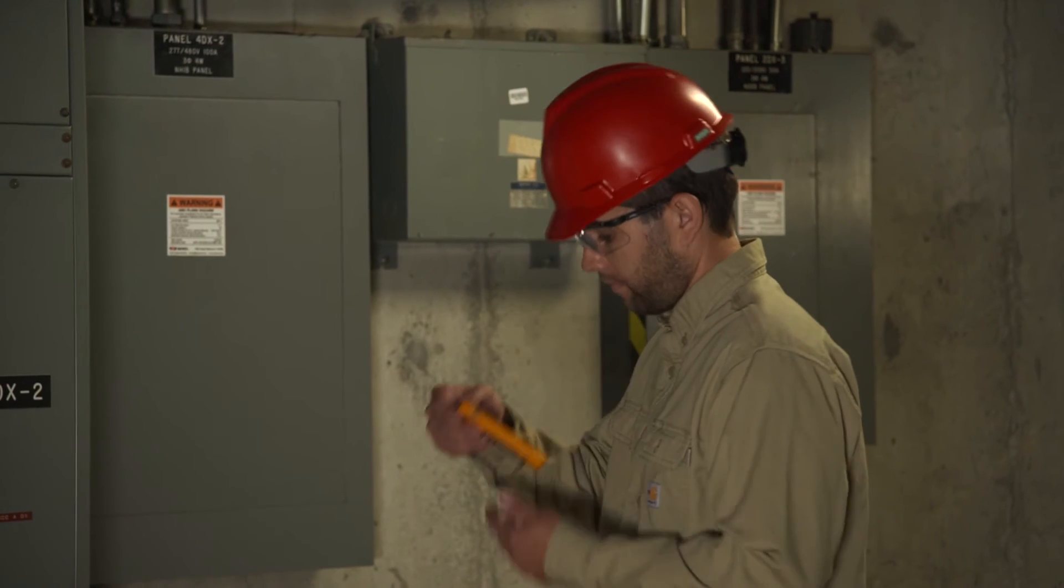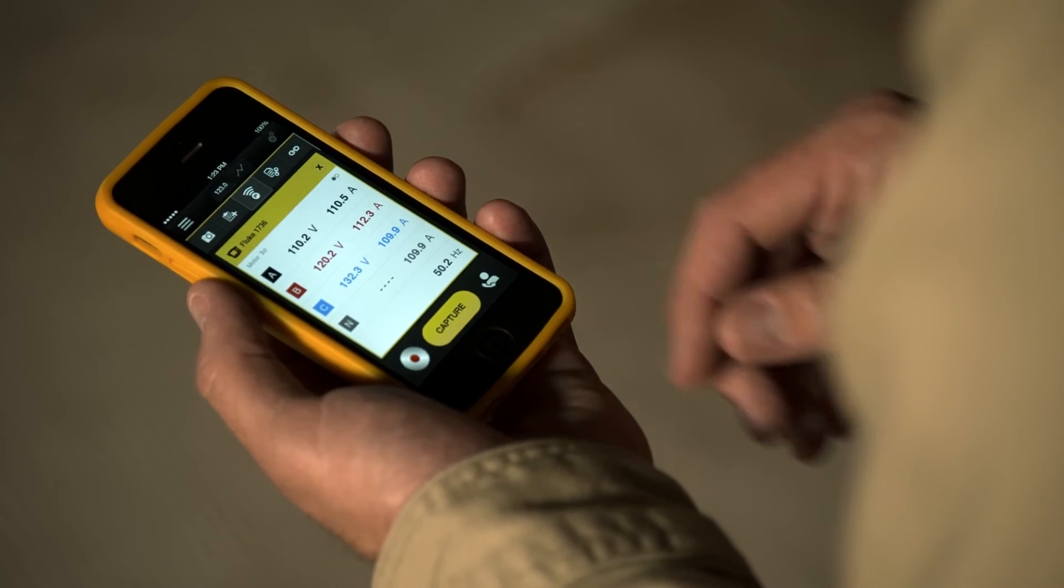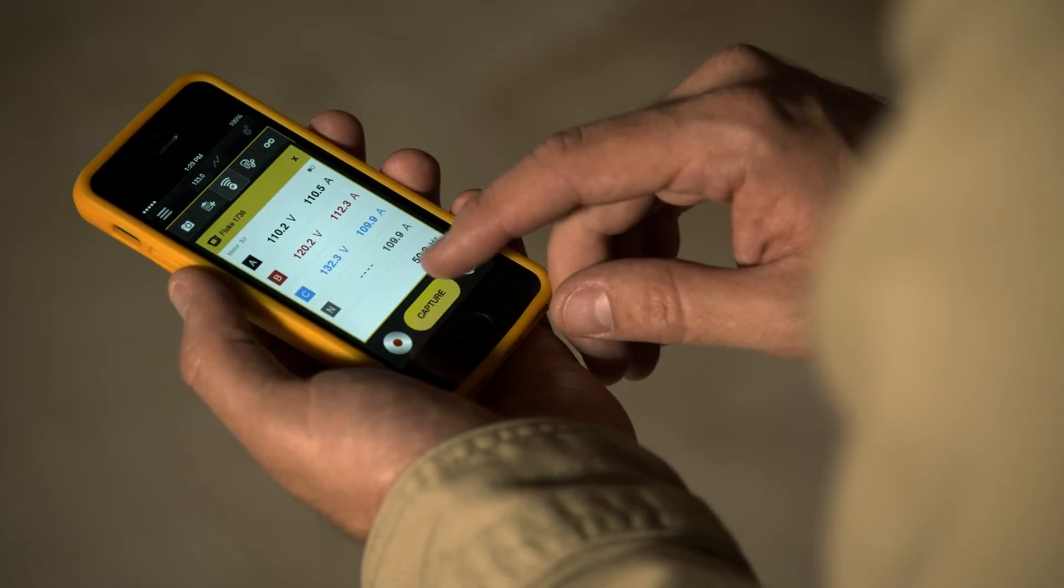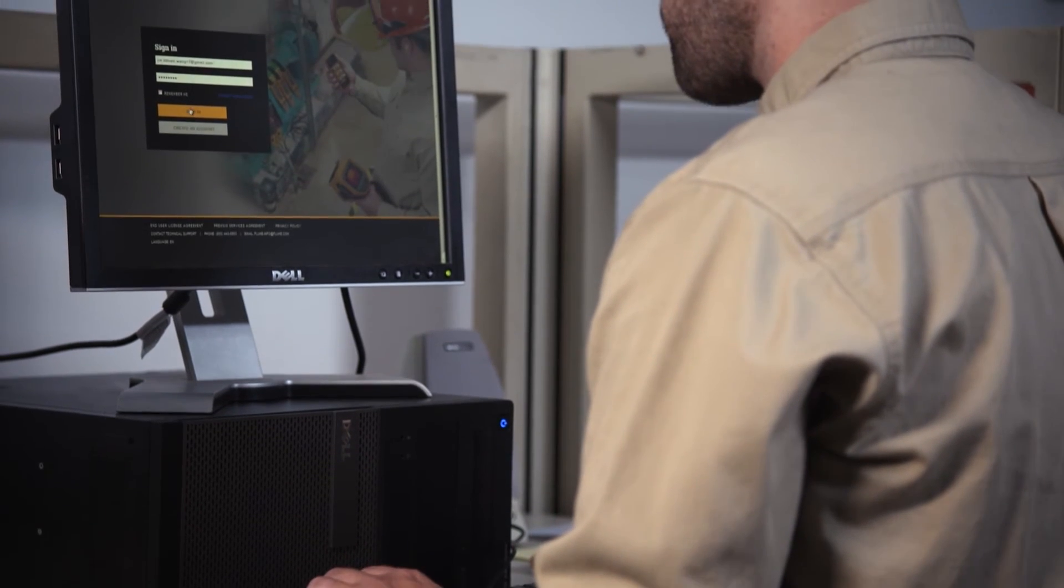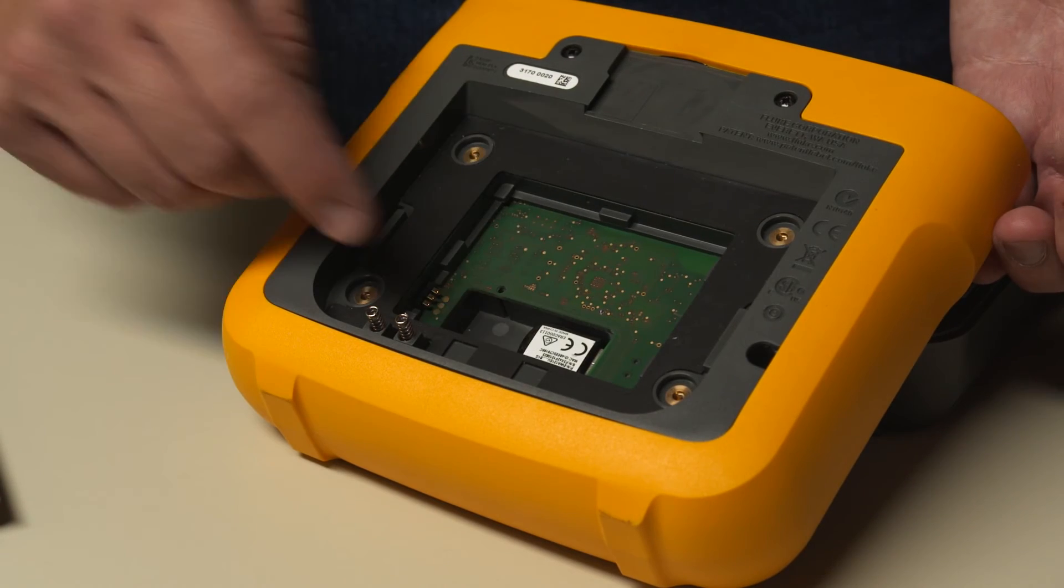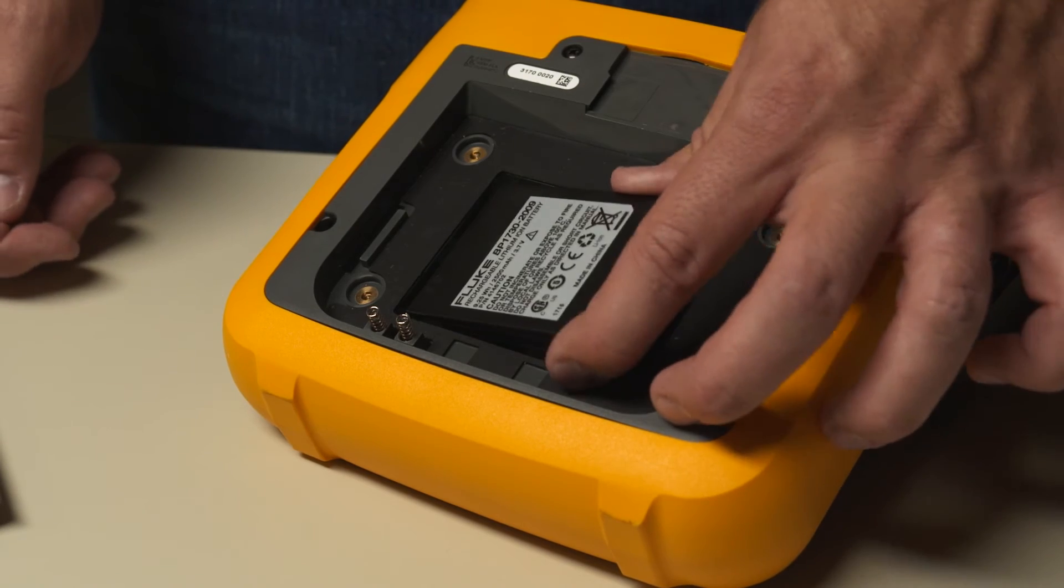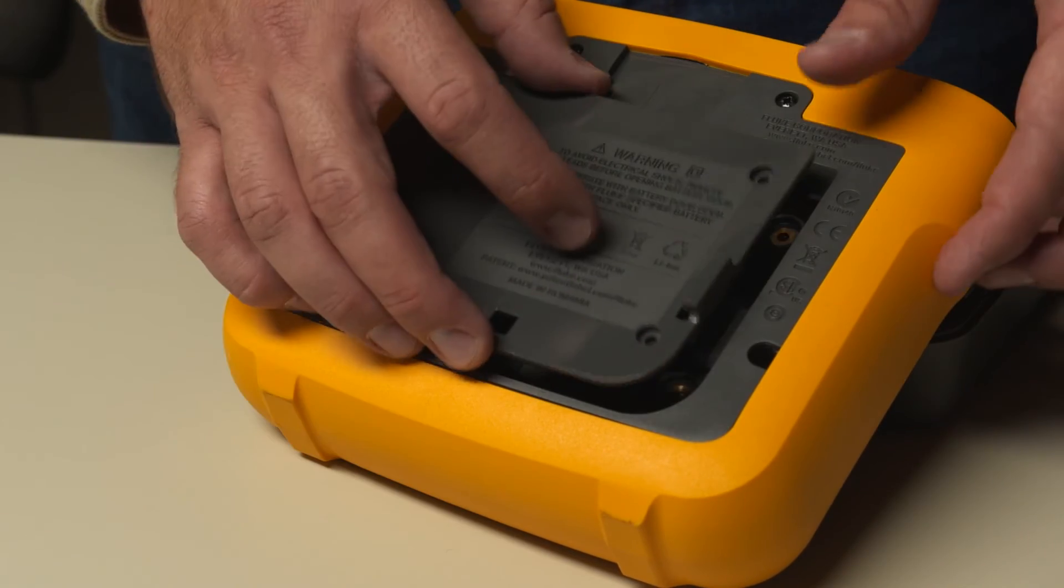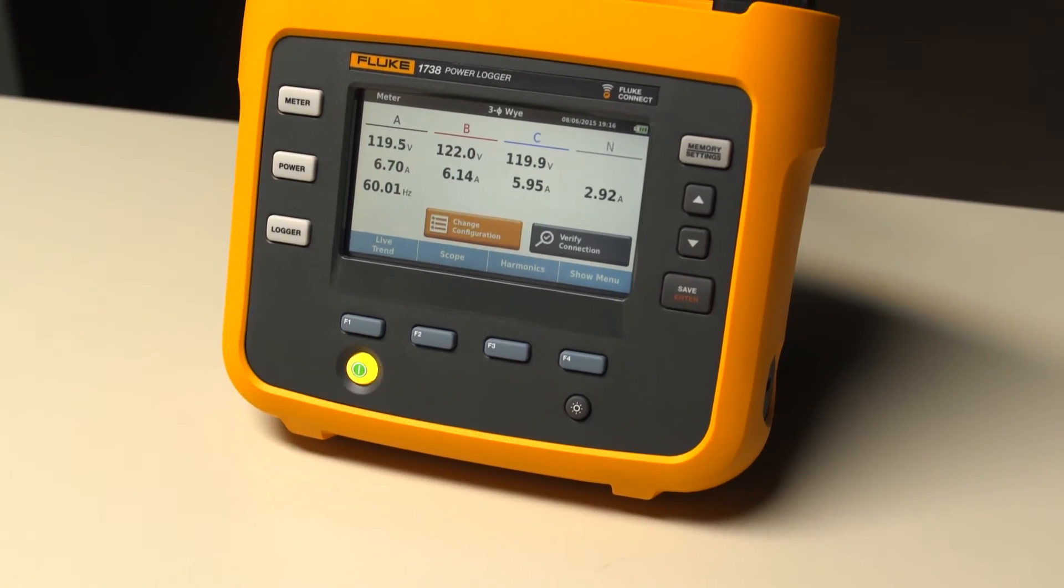Plus, the Fluke 1736 and 1738 are now compatible with the Fluke Connect mobile app and desktop software. With a simple addition of a wireless adapter, the Fluke 1736 and 1738 can be made accessible from anywhere.